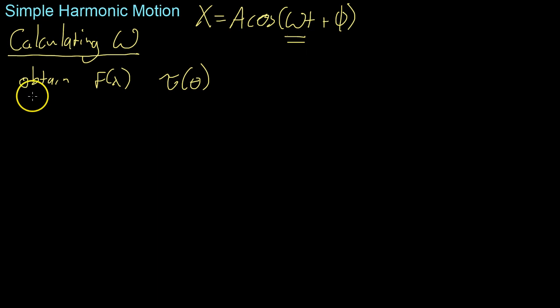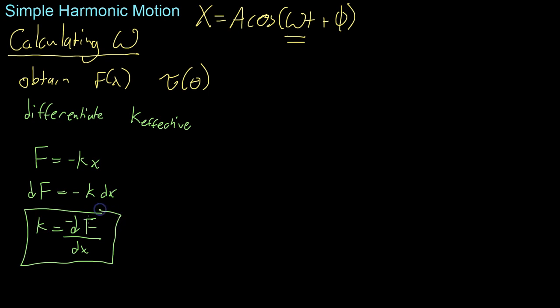Now the next thing you want to do is differentiate to find what's known as the k-effective, in other words, the k value that you experience in this model. And in this case it works because, as we know, f equals negative kx or, differentially, df equals negative k dx or k equals negative df dx. So that's how you determine the k-effective value for the system.